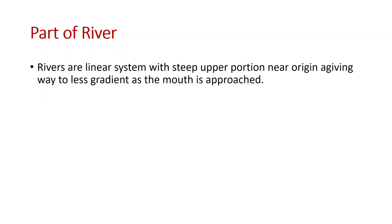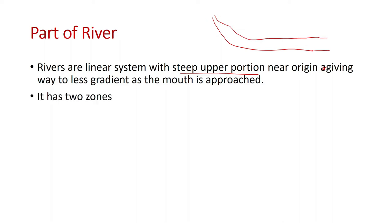Before going into freshwater fisheries, let us discuss about the parts of a river. A river consists of two parts as it is a linear system having a steep upper portion near the origin, giving way to a less gradient and smooth mouth as the mouth is approached. When a river travels down from a hill and reaches the plains, it becomes wide with less gradient. It has two zones: the Rhithron zone and the Potamon zone.